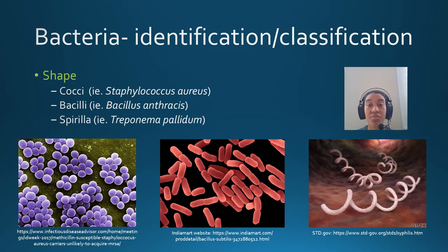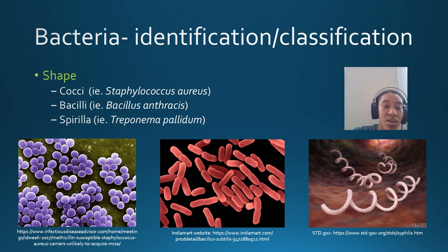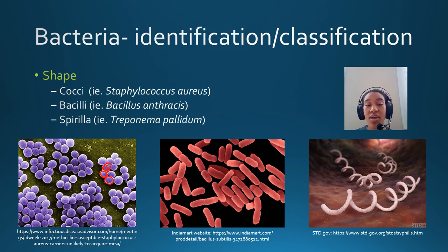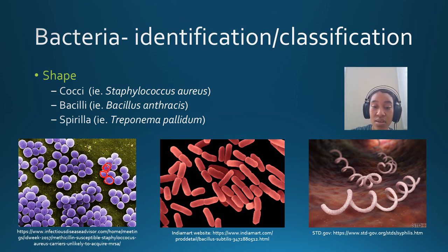There's a lot of diversity in bacteria. We're going to spend some time talking about the different characteristics that bacteria can have — characteristics also used by microbiologists to identify and classify bacteria. One of the first is shape. There are three basic shapes: the first is cocci, which are like little balls. This image of Staph aureus shows cocci clustering into a grape-like formation, where each individual sphere is a single cell.